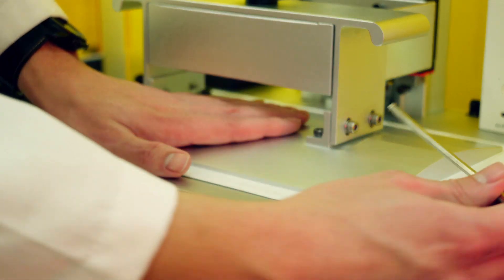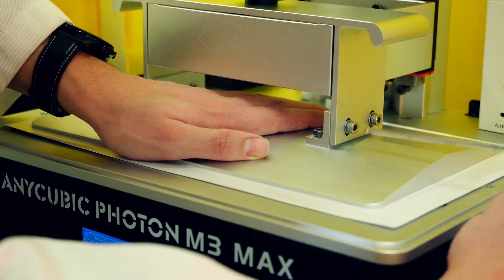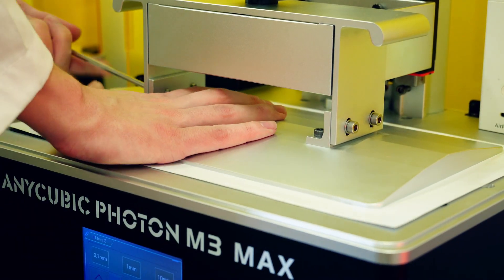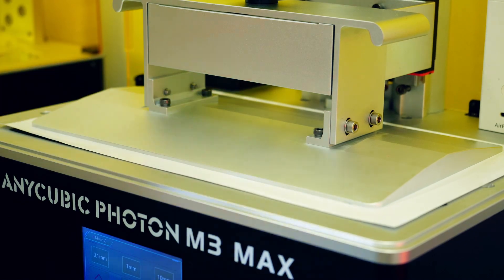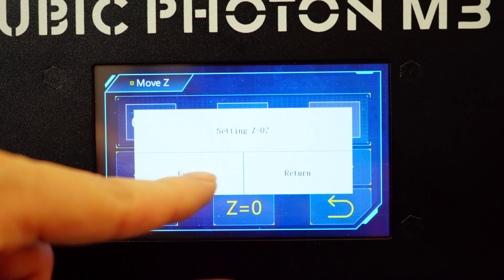So now I'm going to gently press on the build plate and screw in all four screws. Once our build plate has been tightened we're going to set z equals zero, enter, enter.